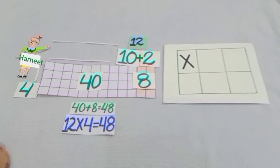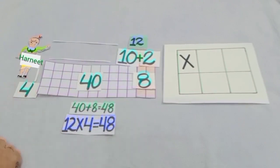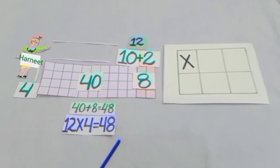Let's start. Students, there are 4 members in Harneet's family and each member gave her rupees 12. So yesterday we split 12 into 10 plus 2, and after multiplication we got the answer 48.